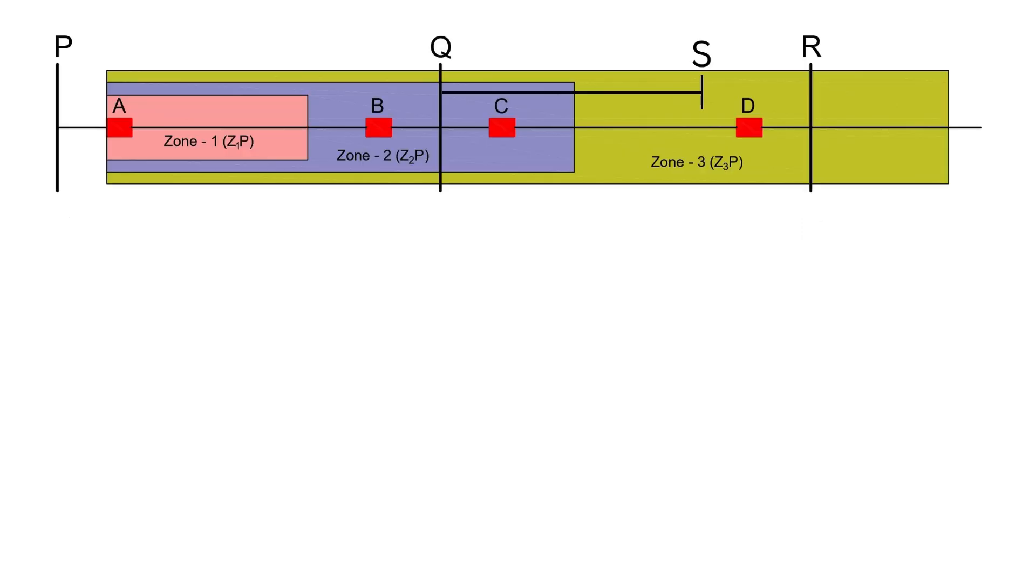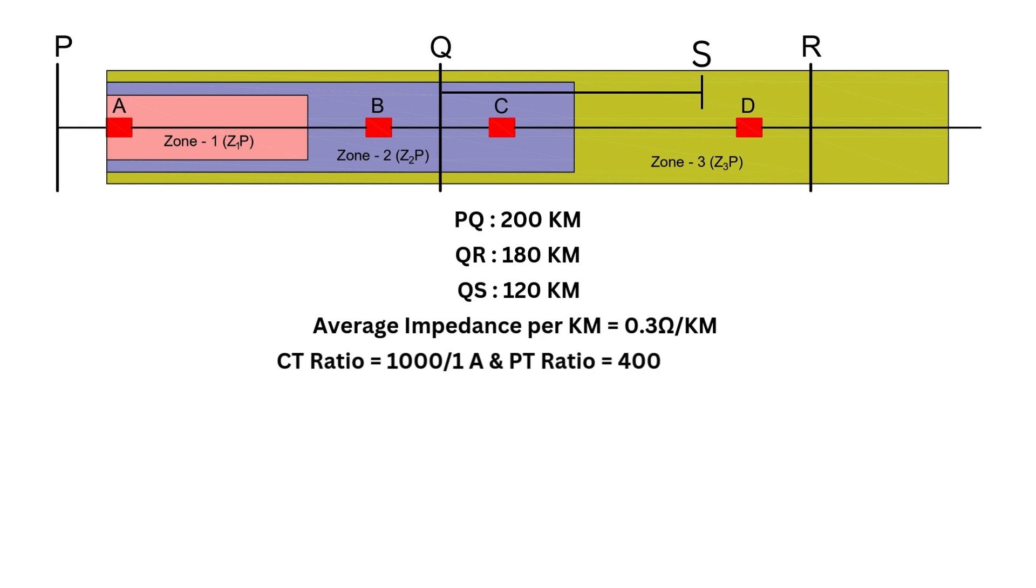Now, let's plug in some values for our calculations. Distance from P to Q, 200 kilometers. Distance from Q to R, 180 kilometers. Distance from Q to S, 120 kilometers. Average impedance per kilometer, 0.3 ohm per kilometer. CT ratio, 1000 by 1 ampere. PT ratio, 400 kV by 110 volts.